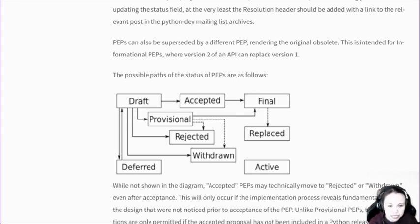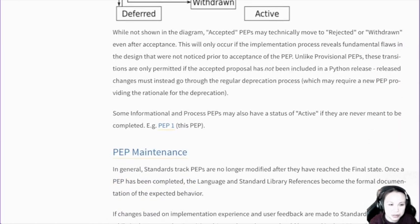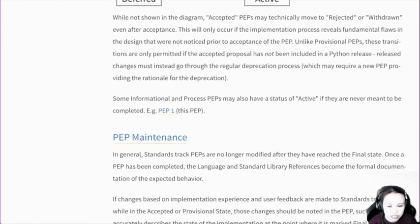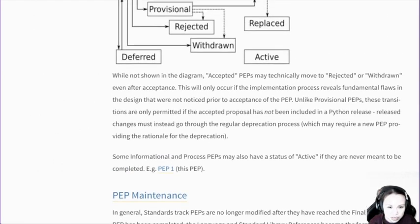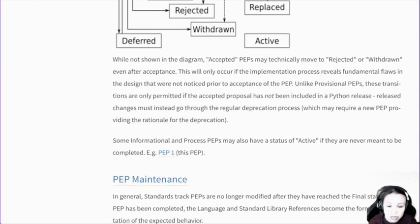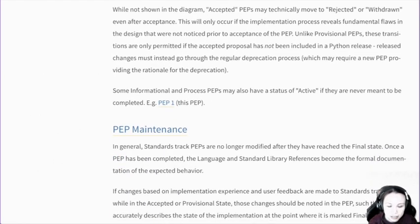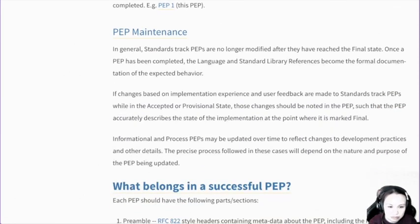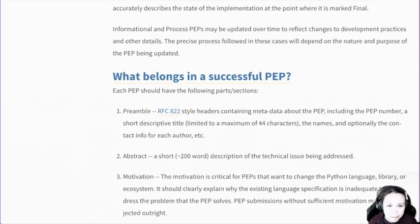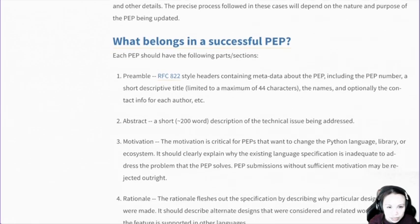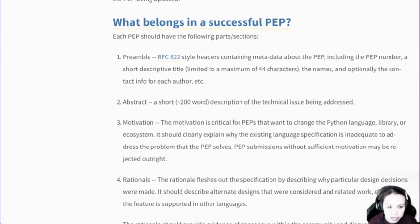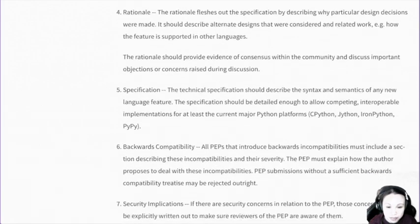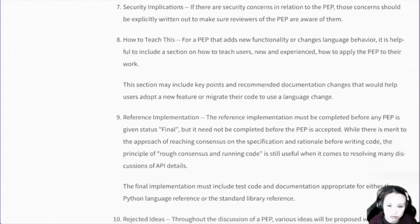It could also be replacing things — for some PEPs, maybe someone decided it's a bit outdated and we have to update it. Someone can propose a change, and if the change is accepted, it will replace something. And if you want to submit a PEP, there are all these things you have to go through.